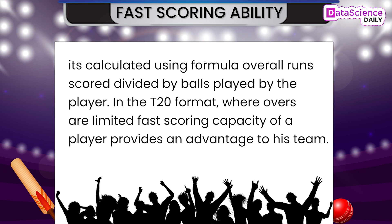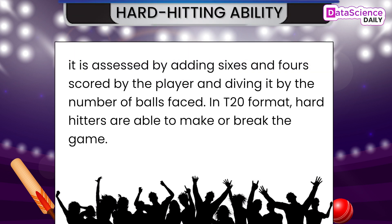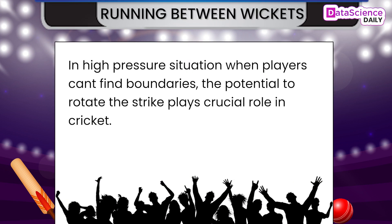Finishing — every team needs a consistent finisher to enhance their chances of winning. Hard Hitting Ability — assessed by adding sixes and fours scored by the player and dividing by the number of balls faced. In the T20 format, hard hitters are able to make or break the game. Running Between the Wickets — in high pressure situations where players can't find boundaries, the potential to rotate the strike plays a crucial role in cricket.